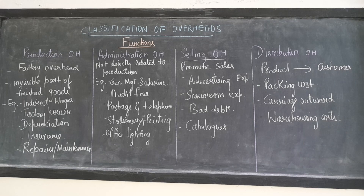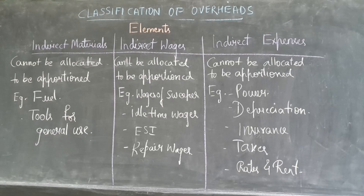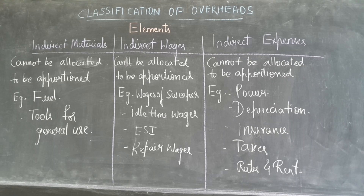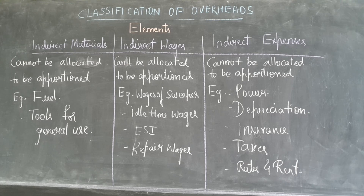When we look into the classification based on the elements, we have three different elements: indirect materials, indirect wages, and indirect expenses.